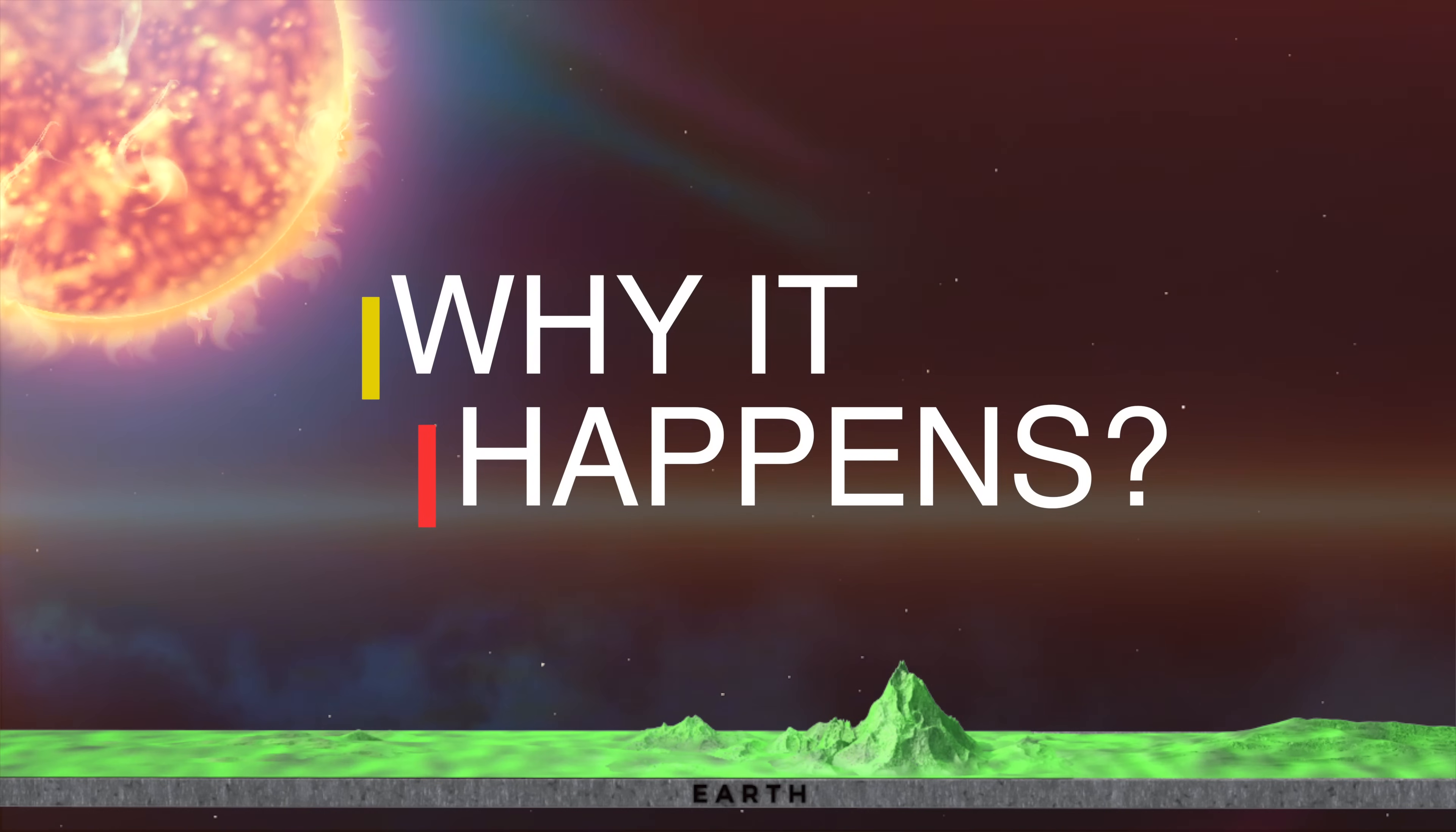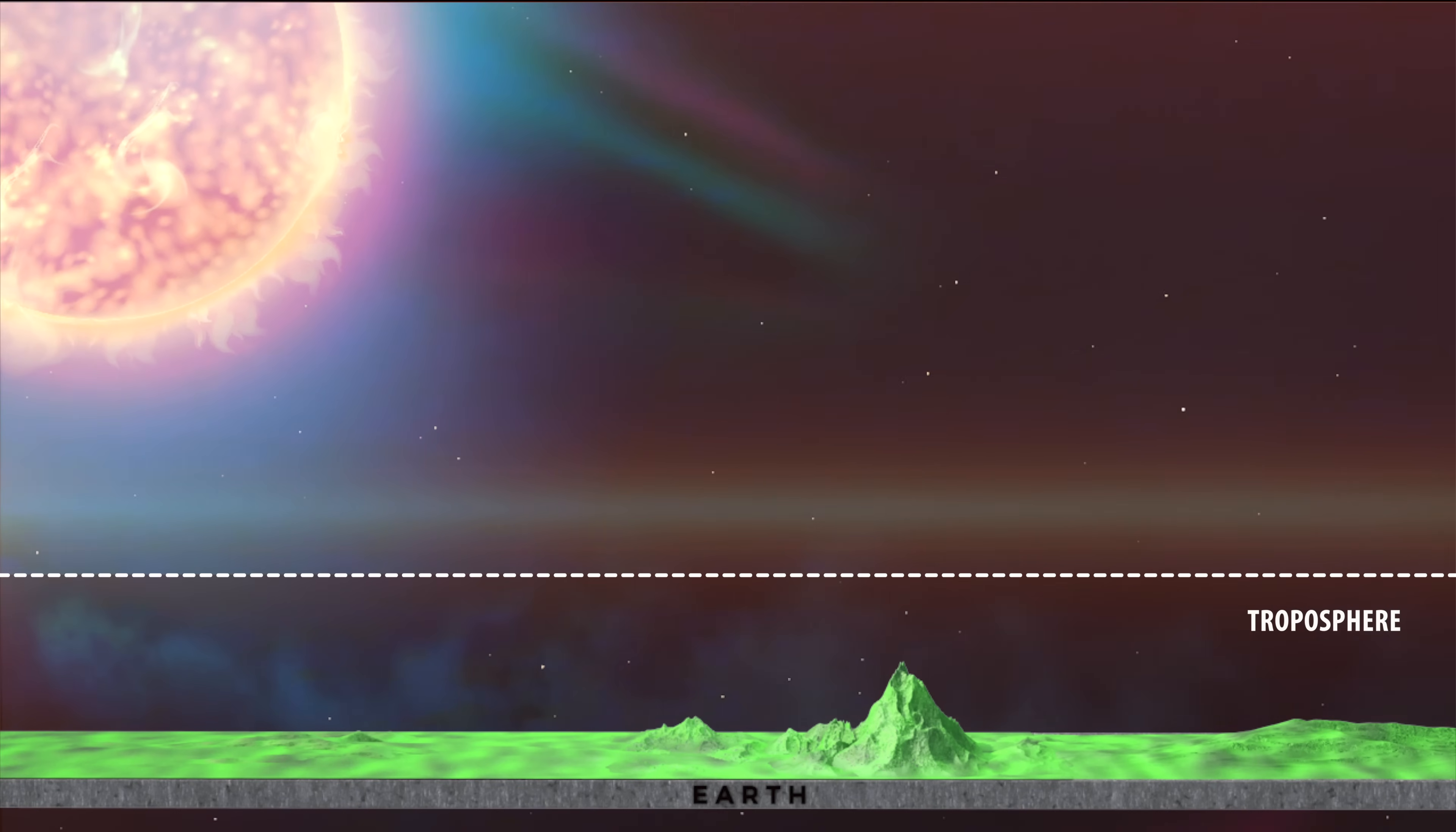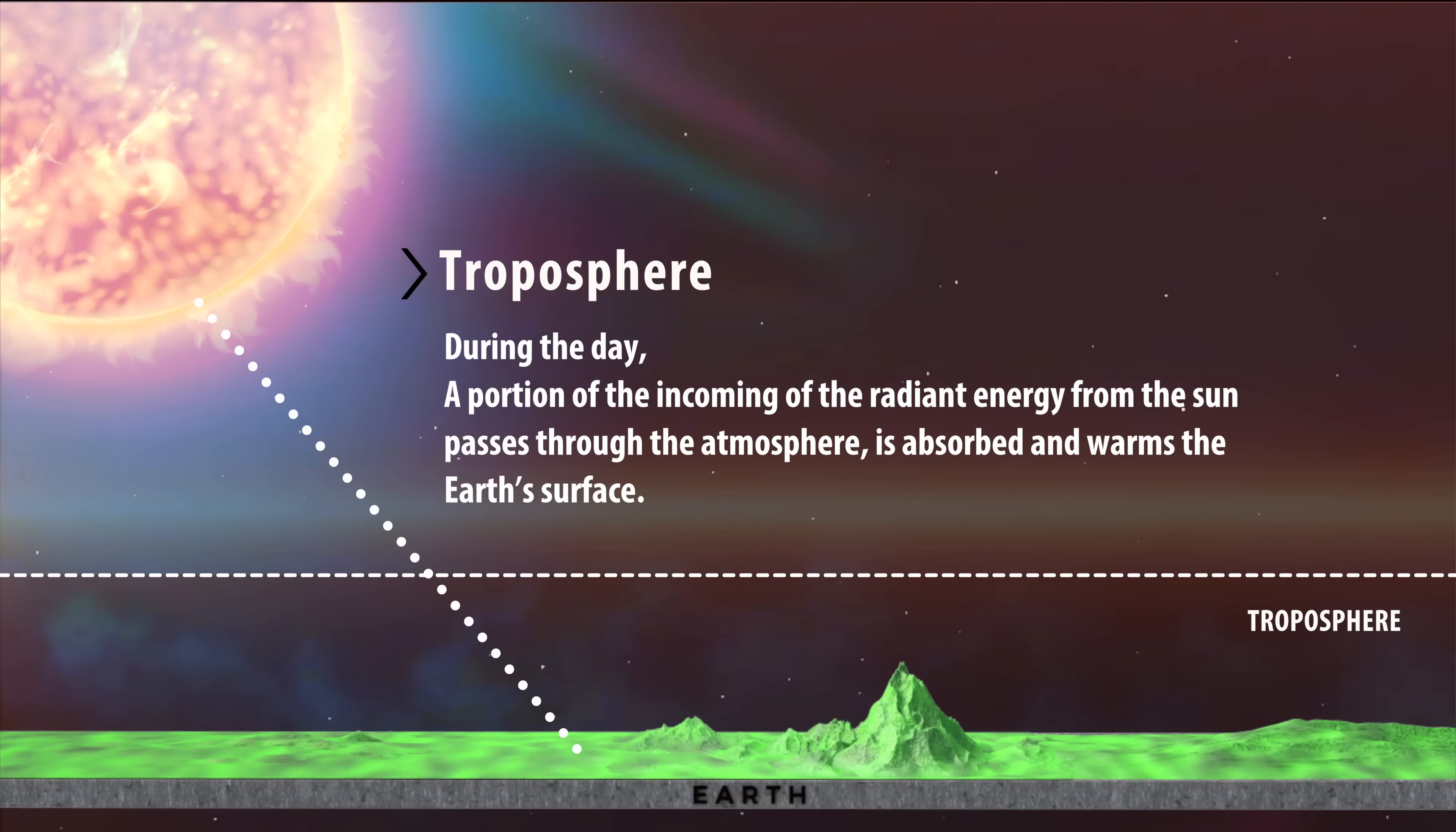Why does it happen? During the day, a portion of the incoming radiant energy from the Sun passes through the atmosphere, is absorbed, and warms the Earth's surface.